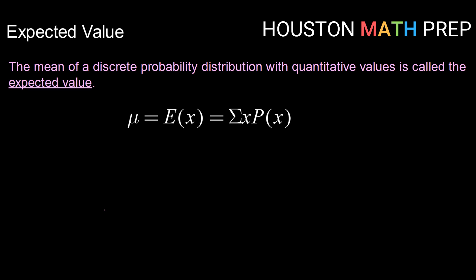Expected value is the mean of a discrete probability distribution with quantitative values. We can look at some notation here. Mu, which we know typically stands for mean, can also be expressed as E of X, or the expected value of the random variable X. The way that that's calculated is with the sum of each random variable times its associated probability.